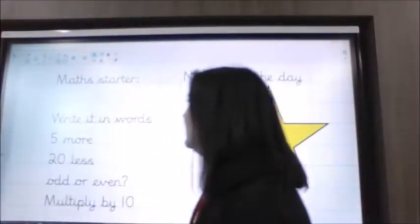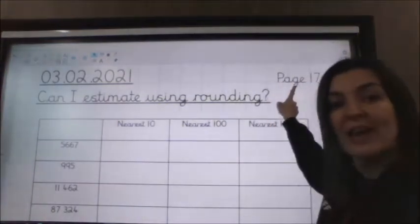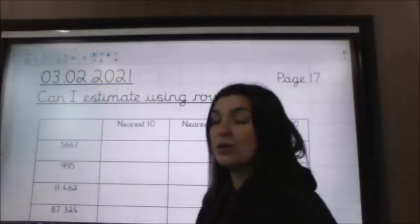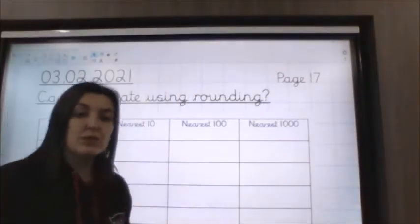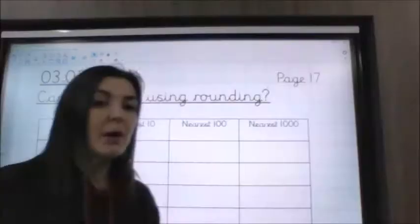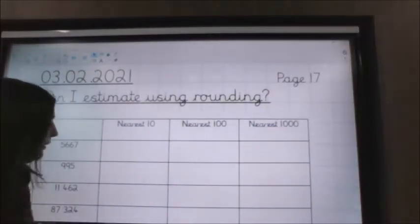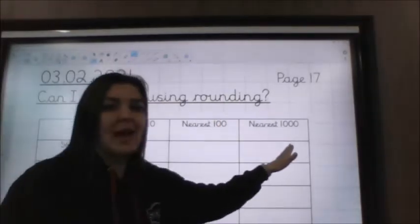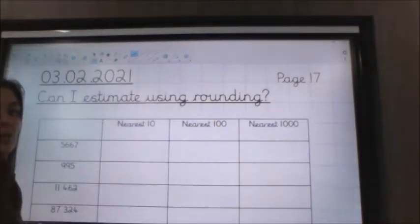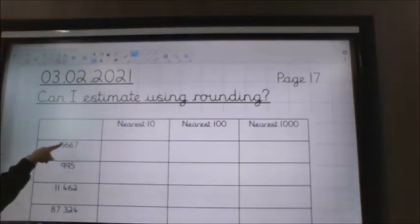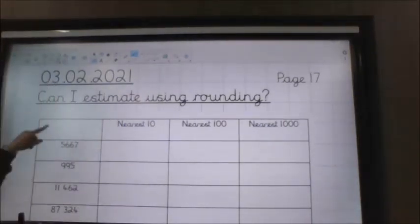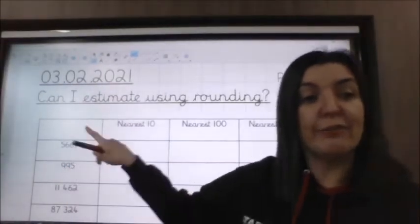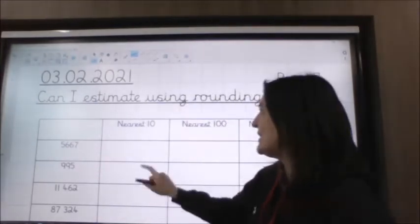So today's learning is on page 17 and it's: can I estimate using rounding. The first little section at the top is a little reminder about how to round. I'm going to go over something really similar. You've got to round the numbers to the nearest 10, the nearest 100 and the nearest 1,000. This is exactly like you've got in your book but I've just used different numbers. My first number is 5,667.